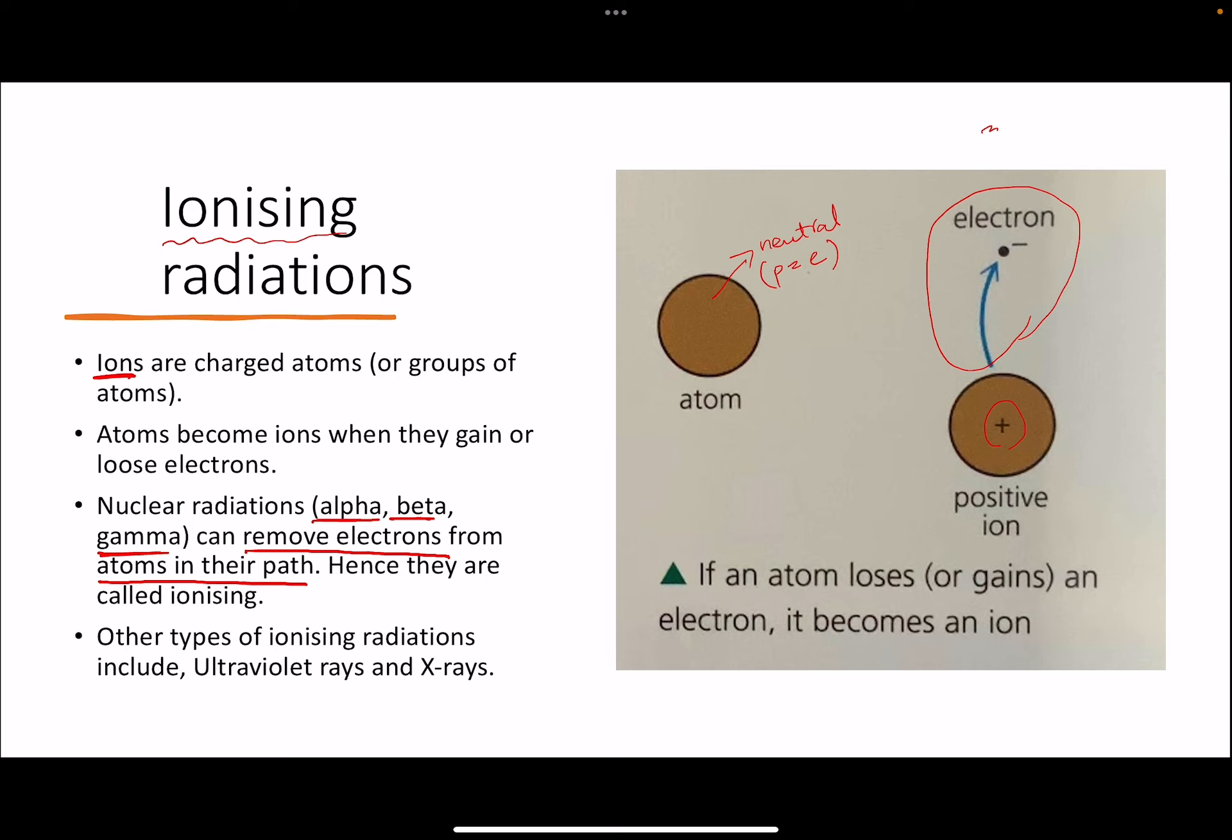If beta radiation is traveling through your body, it will come in contact with the particles, the atoms inside your body, and it will cause them to become ions. And those ions, this ionization process is basically what makes these radiations so dangerous, because they can make changes to the atoms.